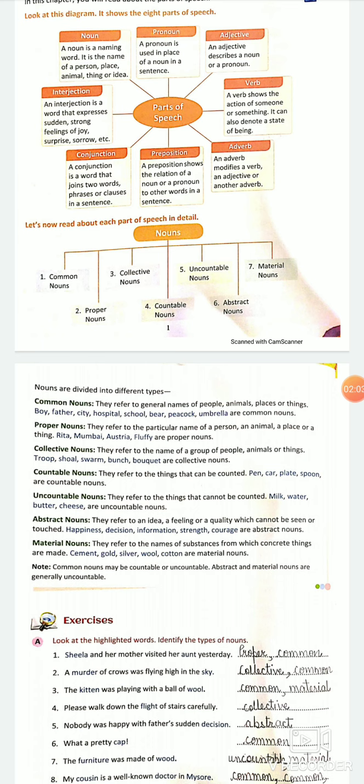For example, I say bunch of keys. The word bunch itself gives me the visual of more than one. If I say bunch, I can imagine bunch of keys, not one key. So collective noun gives you the idea of collection. Gang of thieves, class of students.